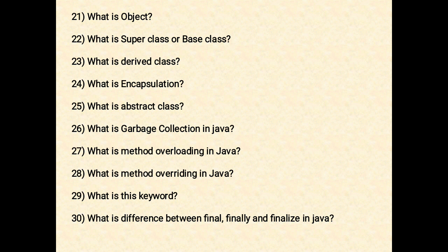'finally' is a block. The finally block always executes when the try block exits. This ensures that the finally block is executed even if an unexpected exception occurs. It allows the programmer to avoid having cleanup code accidentally bypassed by return, continue, or break. Putting cleanup code in a finally block is always good practice even when no exceptions are anticipated.